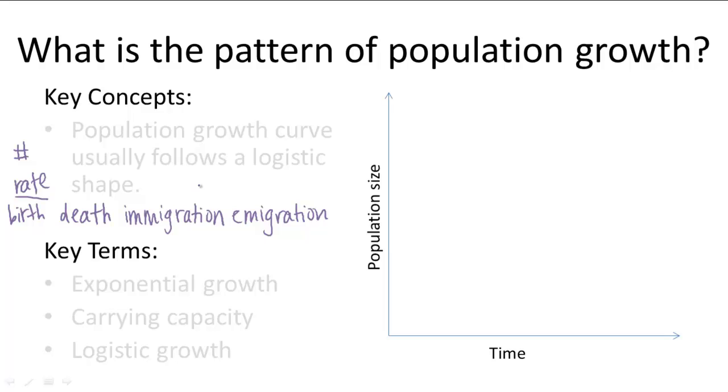And the simplest model for population growth is a model that looks something like this. You start somewhere down here, and you first have a slow rate of growth, but you get faster and faster. And this model, you see a population grows at an increasing rate with no limitations. This is called exponential growth. The human population has been undergoing exponential growth for the past 300 years.